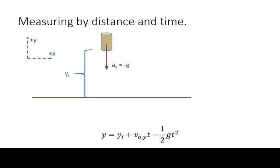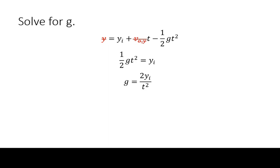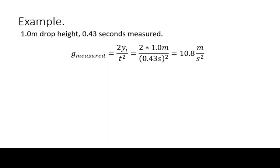Assuming acceleration to be constant, you can use the kinematic equation for free fall to calculate an experimental value for g. Here are the algebraic steps for the derivation. Here are example values to plug in with units.